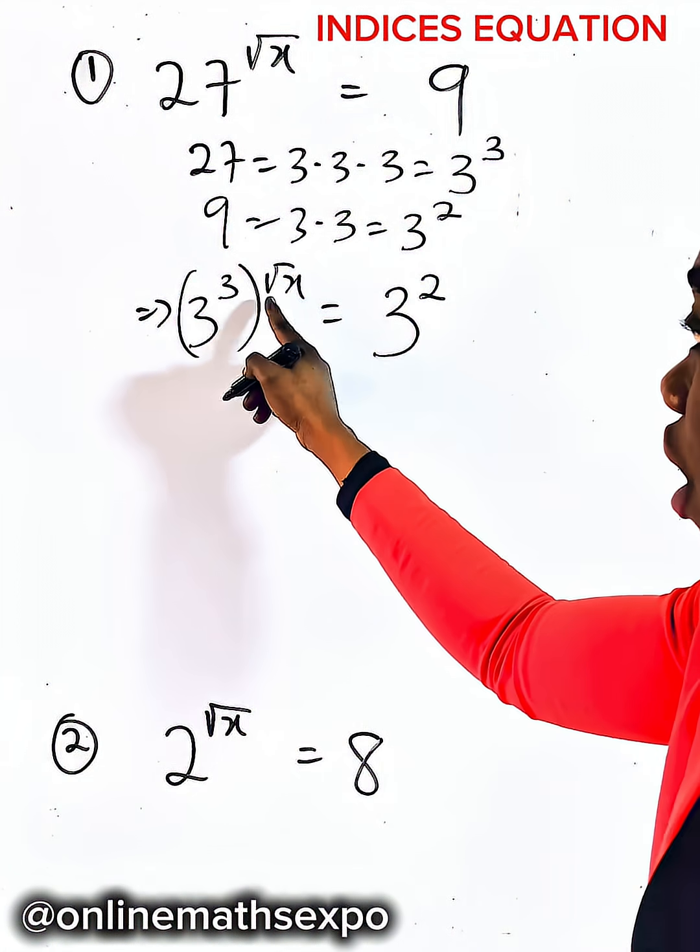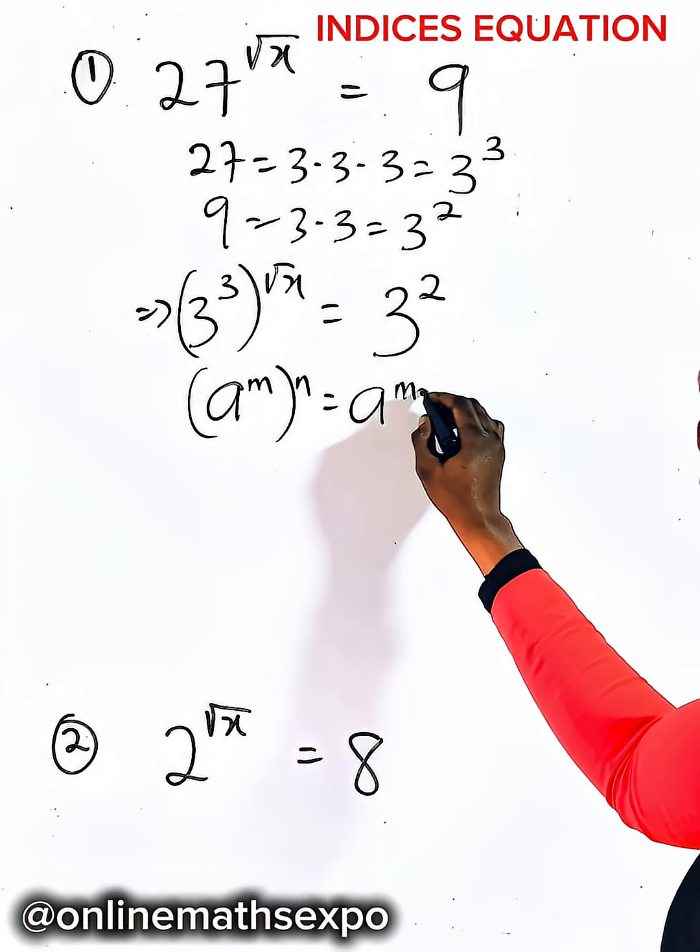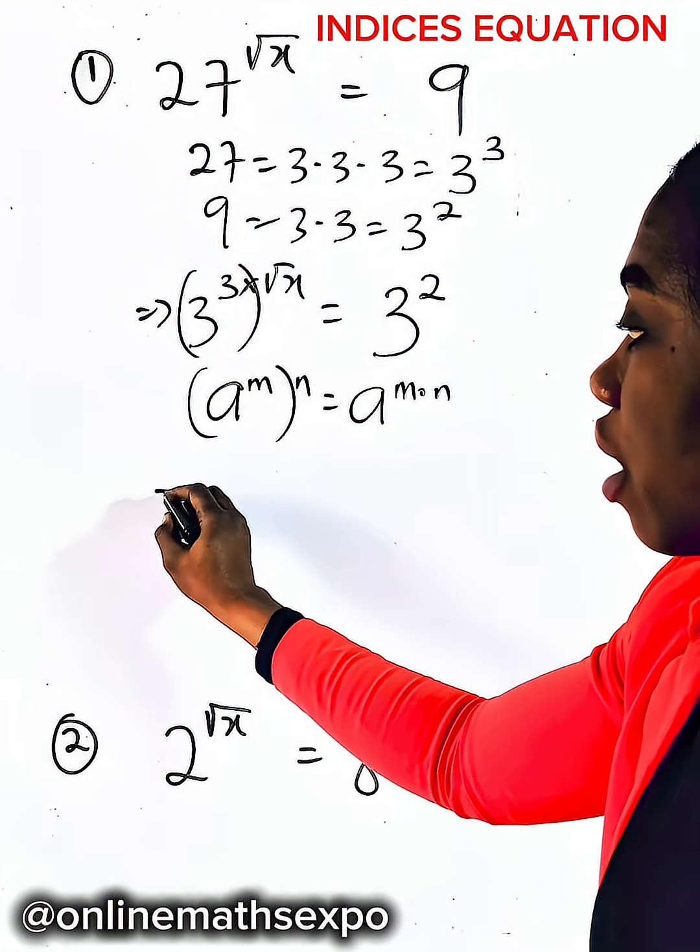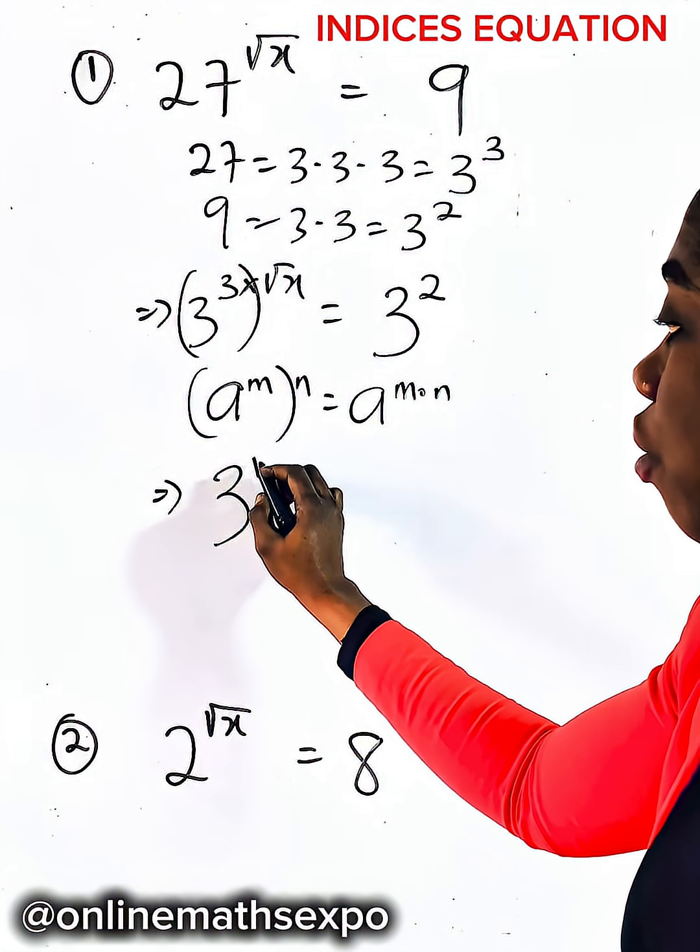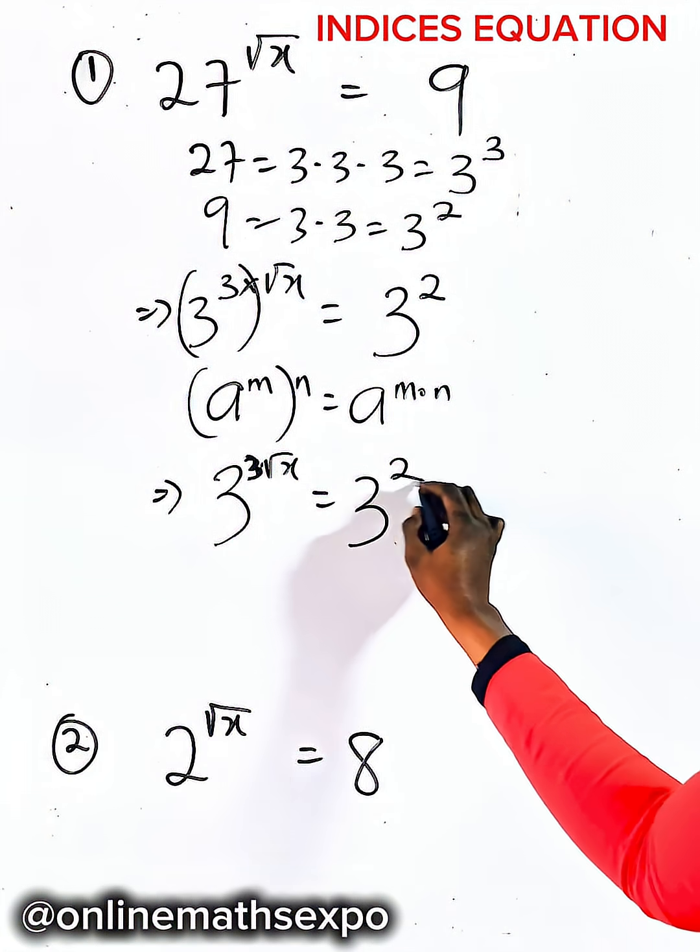Now what you do next is remember that (a^m)^n is always equal to a to the power of m multiplied by n. So these powers we multiply, so we have 3 to the power of 3 root x is equal to 3 to the power of 2.